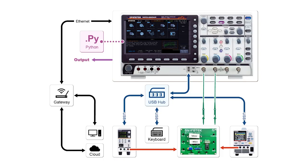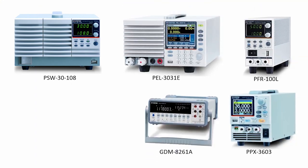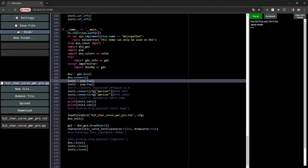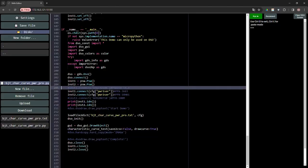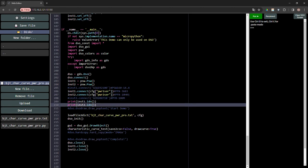Under Python script control, MPO-2000 can communicate with external USB devices through the USB interface using the CDC-ACM protocol for collaborative testing. Connectable devices include the PSW, PFR, PPX, PL, and GDM series. MPO can also control external devices via LAN using the socket protocol, making it suitable for small-scale automation and semi-automation testing applications, saving engineers considerable time and effort.